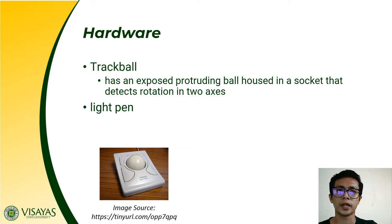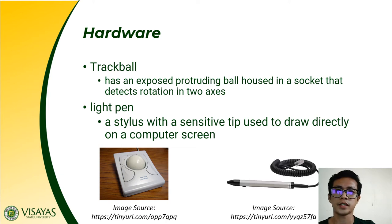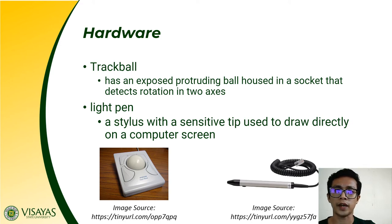Aside from an optical mouse and a trackball, another pointing device is what we call a light pen. A light pen is a stylus with a sensitive tip which is used to draw directly on a computer screen. They are commonly used in touch screen-enabled devices which allow you to draw something using a pen or stylus.